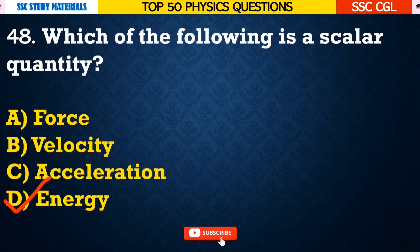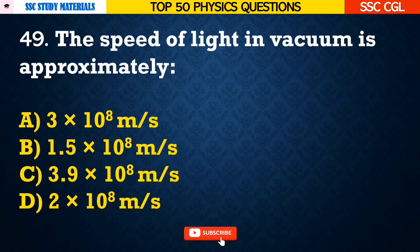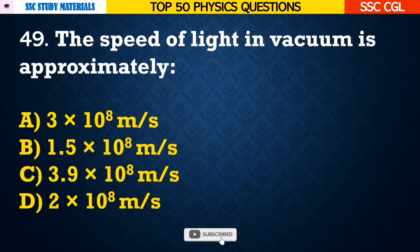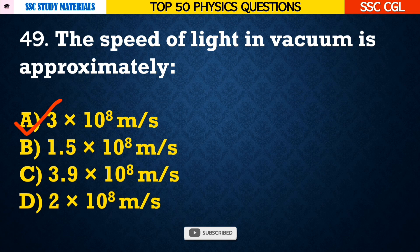Question number 49: The speed of light in vacuum is approximately — Answer A. 3 × 10⁸ meters per second.